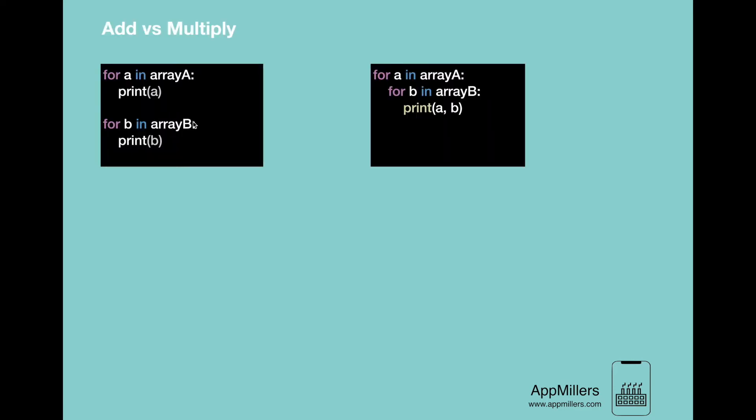To make it clear, let's examine these two cases in this code block. In the example on the left, we have two separate loops which are looping through array A and array B. But on the right, we have two loops inside each other.